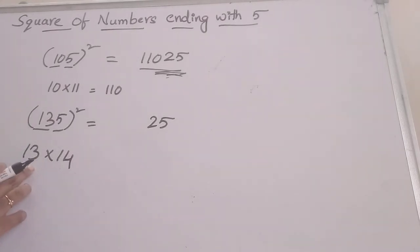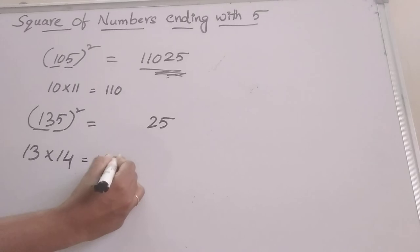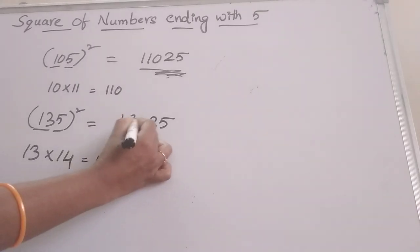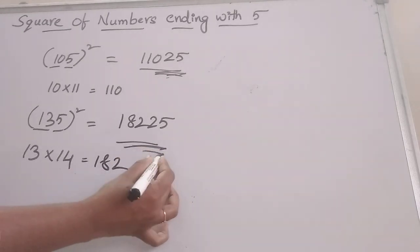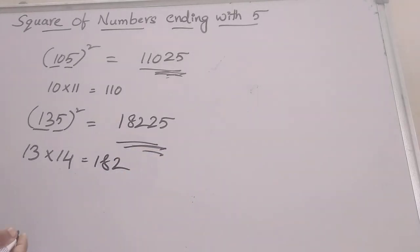I have already taught a technique for multiplication of two two-digit numbers in session 1. I am sharing that link in the comment section. You can go through it if you want. 13 times 14 equals 182. Write 182 here. This is the answer. So, simple technique for finding the square of numbers ending with 5.